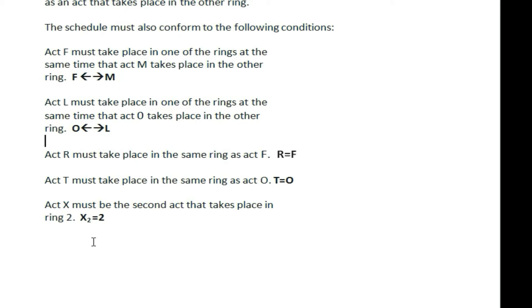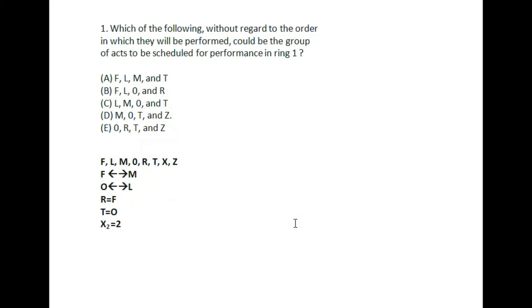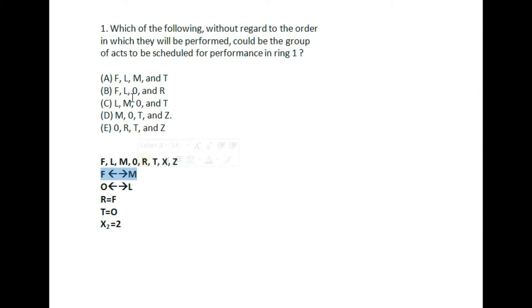Let's start with the first question: which of the following, without regard to the order in which they will be performed, could be the group of acts scheduled for performance in ring 1? We cancel out the answer options using the conditions. Since F and M cannot be in the same ring, if any option has both F and M together, we eliminate it. The first option has F and M together, so it is eliminated.